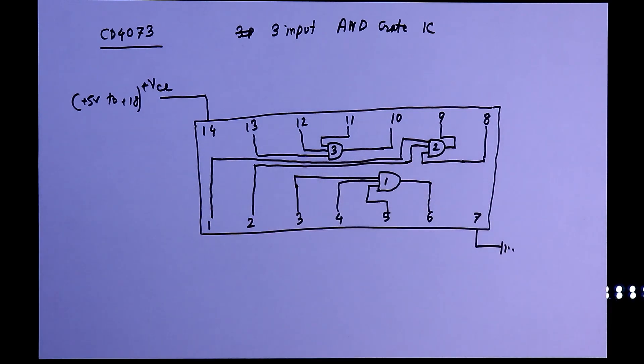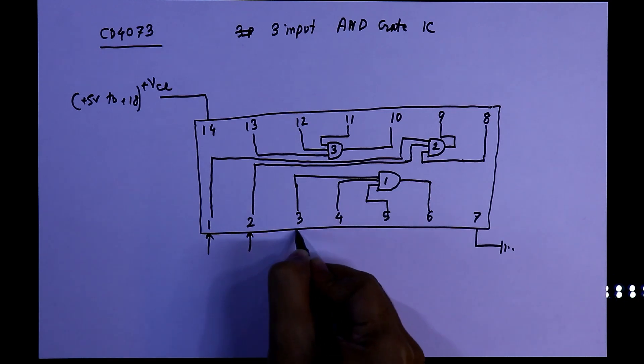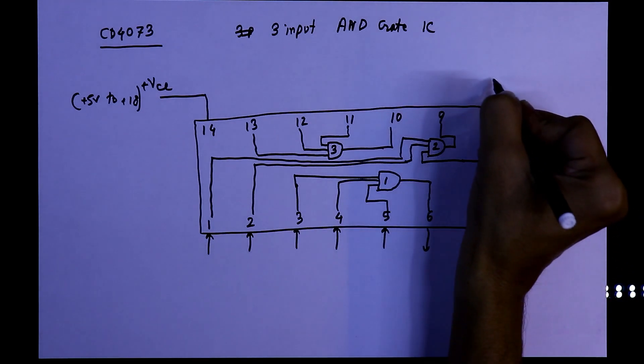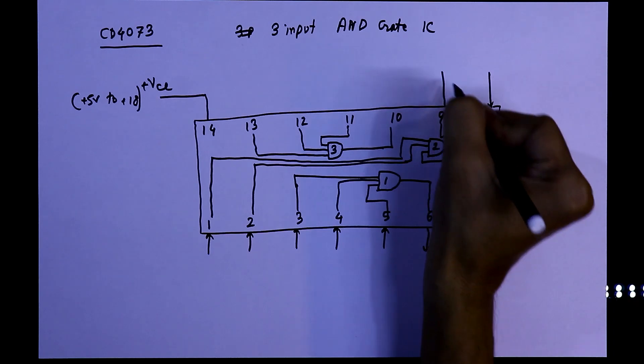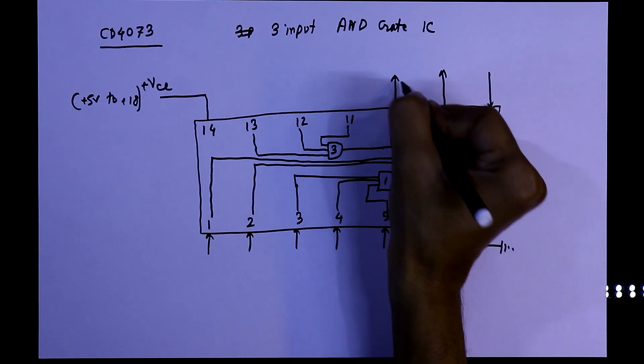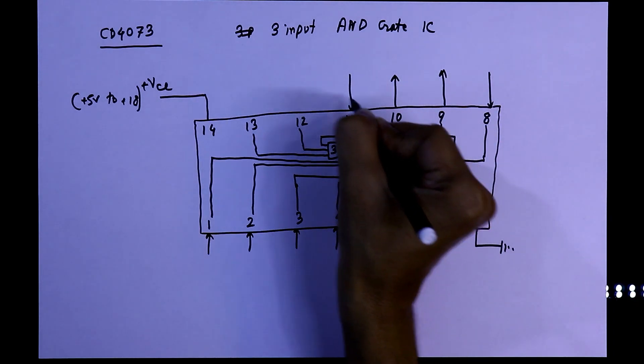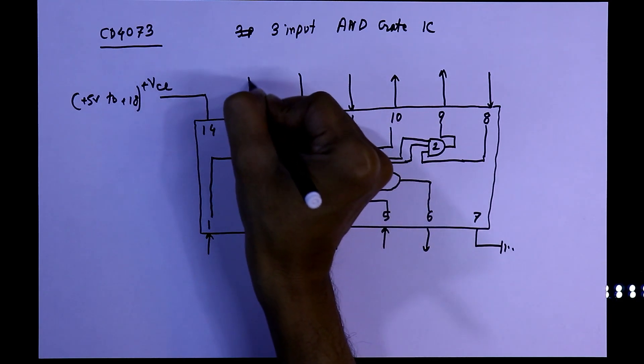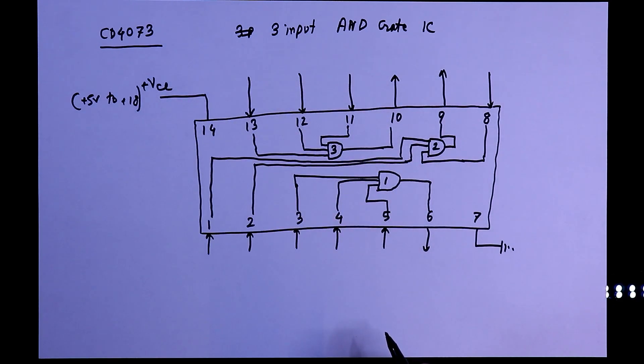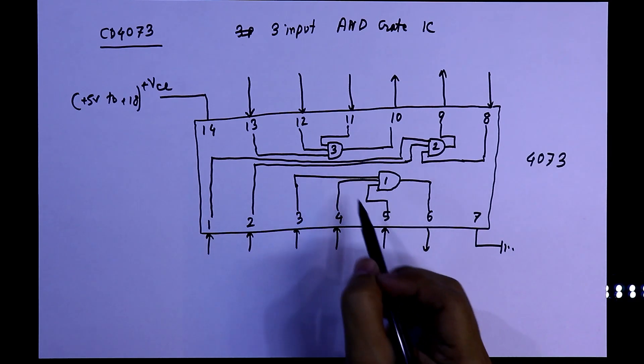So these are the 3 gates. Pins 3, 4, 5, 11, 12, and 13 are inputs. Pins 6, 9, and 10 are outputs. This is the pin diagram. Now we will verify this IC on the breadboard. For this, we will use only gate number 1.